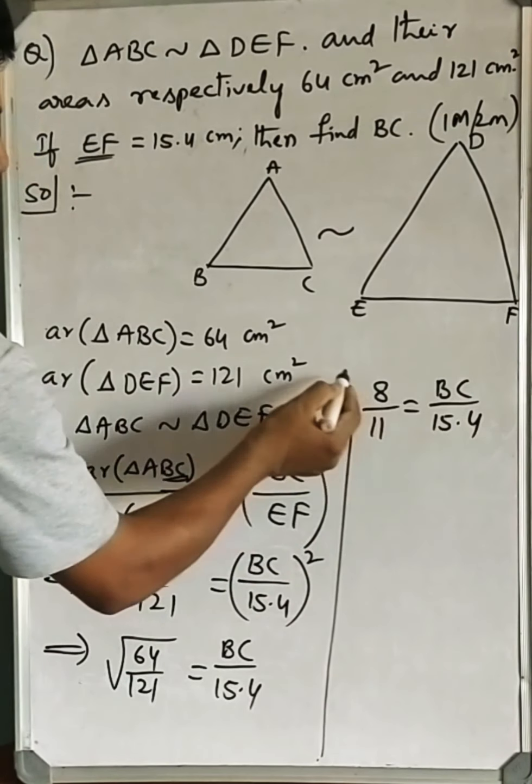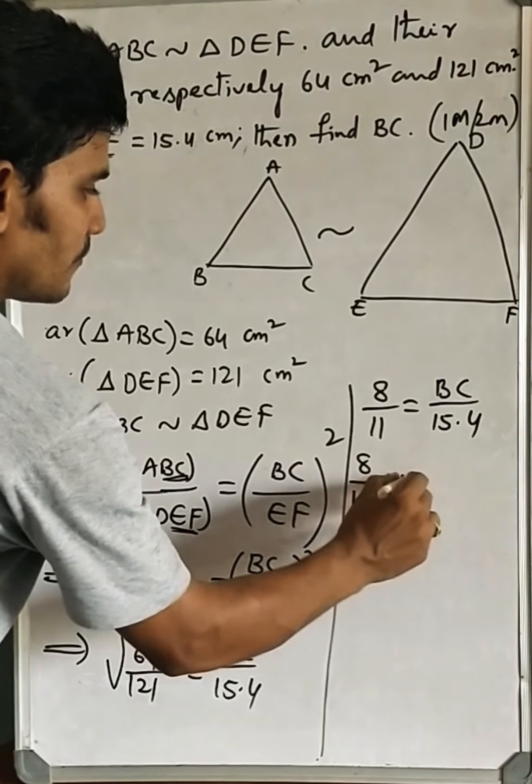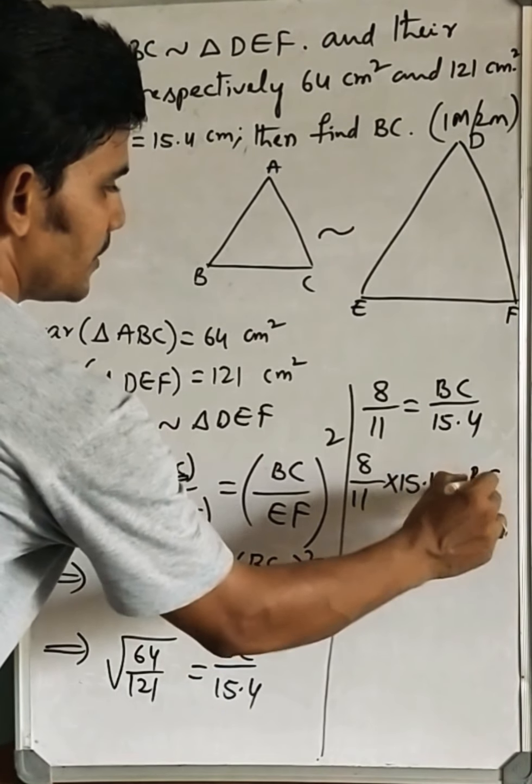Bring this 15.4 into the left-hand side. 8 by 11 times 15.4 is equal to BC.